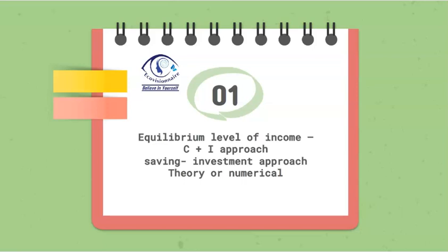The first very important topic is equilibrium level of income — the C plus I, that is the AD-AS approach and saving and investment approach. You can either get a theory question on this or a numerical question asking equilibrium level of income, consumption at equilibrium level, autonomous consumption, MPC, or investment to be calculated. There is a single equation: AD equals C plus I and AS equals Y, so Y equals C plus I is used to solve this. For the theory part, they will be asking you the adjustment mechanism and the impact on output, income, and employment.